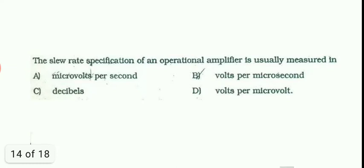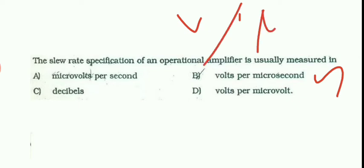The slew rate specification of an operational amplifier is usually measured in. It's a direct question. The unit of slew rate is volt per microsecond. That is very important, volt per microsecond. This is telling how much voltage is changing per microsecond. That is what important point. So it is a direct question.